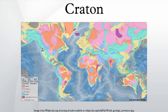A craton is an old and stable part of the continental lithosphere. Having often survived cycles of merging and rifting of continents, cratons are generally found in the interiors of tectonic plates. They are characteristically composed of ancient crystalline basement rock, which may be covered by younger sedimentary rock.